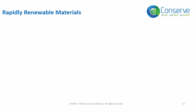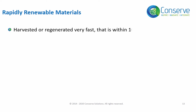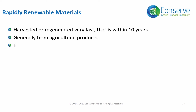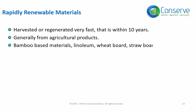The next strategy is to use rapidly renewable materials. Rapidly renewable materials are materials that can be harvested or regenerated very fast — that is, within 10 years. They are generally from agricultural products. Examples of rapidly renewable materials include bamboo-based materials, linoleum, wheat board, straw board, and cork.